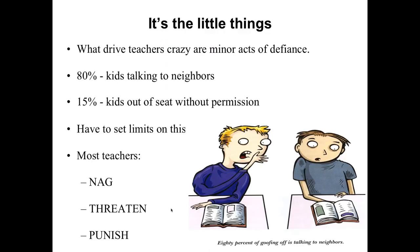Small discipline problems — like kids talking when they're not supposed to, out of their seat without permission — this is not code red, nothing threatening, but it really aggravates and stresses teachers out. Many teachers respond the wrong way — they nag, threaten, and ultimately punish. That cycle of nag, threaten, punish creates a negative dynamic and is actually ineffective at dealing with these small behaviors, which then begin to escalate into major behaviors.